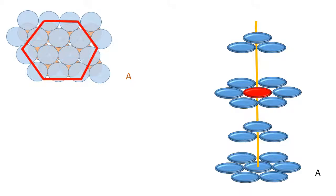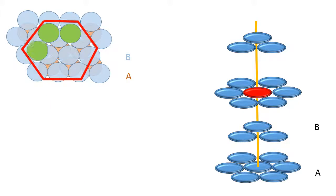Now, focusing on how many spheres are present inside the hexagon, I see there are 3 spheres inside the hexagon. Therefore I name it as a B layer because it is different from the first layer. I get 2 types of voids: the tetrahedral void and the octahedral void. Let me place the third layer above the B layer; this time I will be covering the tetrahedral voids.